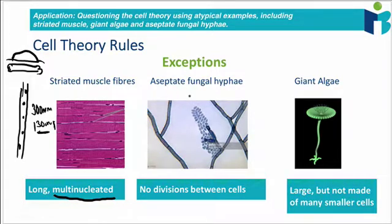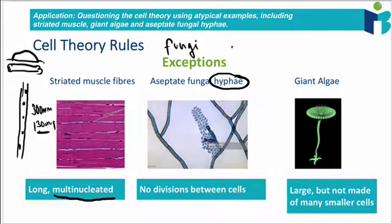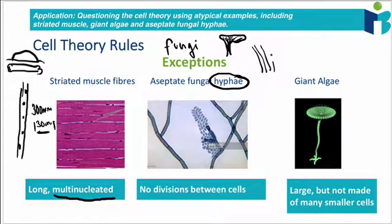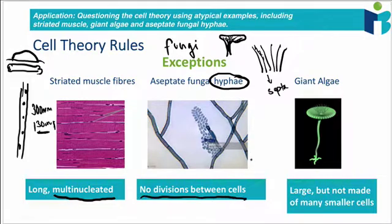The second type of cell that can be used to challenge the cell theory is aseptate fungal hyphae. Fungi are normally composed of strands or threads called hyphae — if you've ever picked up a mushroom, it's kind of composed of loads of strings or threads. These hyphae are normally separated by divisions called septa, like a septum that divides two things. But in aseptate fungal hyphae, these divisions between the cells are lost, and that's why we consider it an exception to cell theory.